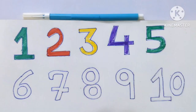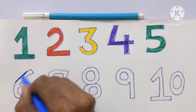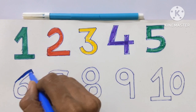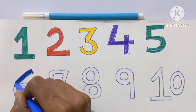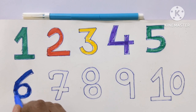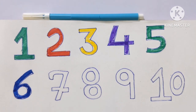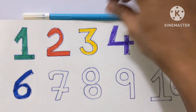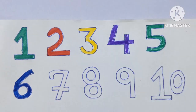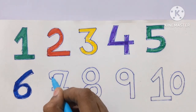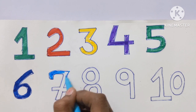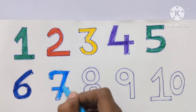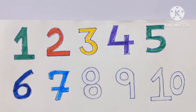Next is number 6. Let's color with a blue color. Next is number 7. Let's color the number 7 with a sky blue color. Number 7 is in sky blue color.